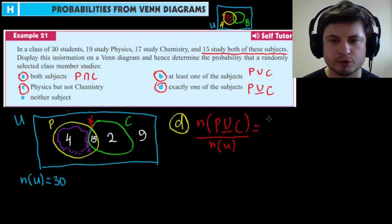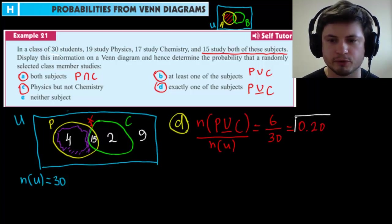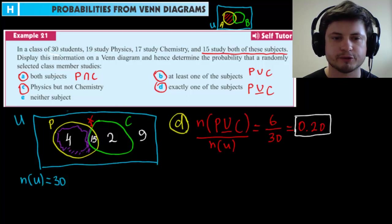It's four plus two, which is six divided by 30. And the answer is, I believe it's 0.20. I don't even have to use a calculator for this because I think it's one fifth, which is 0.20. And so that's the answer to question D. So 20% chance that if you pick a student, exactly one of the subjects, they'll be studying that, but not both subjects.